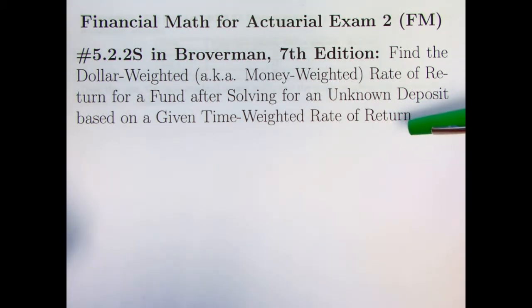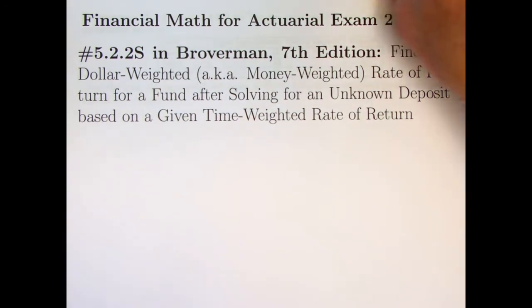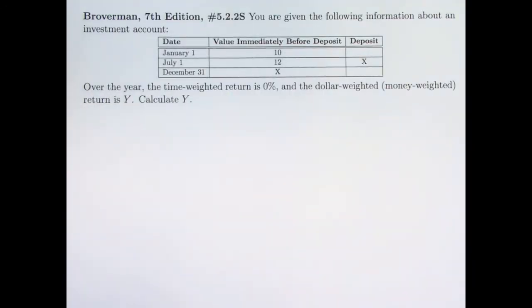Just like in the last video, we'll be talking about dollar-weighted and time-weighted rates of return. The goal in this problem is to find the dollar-weighted, also known as money-weighted, rate of return for a fund after we solve for an unknown deposit based on a given time-weighted rate of return. And it is a pretty quick video, pretty short problem.